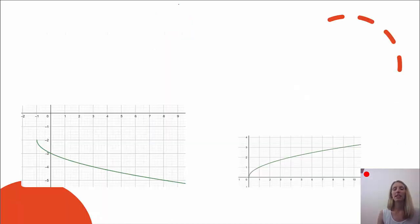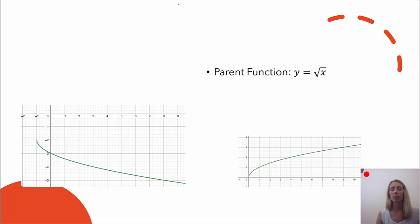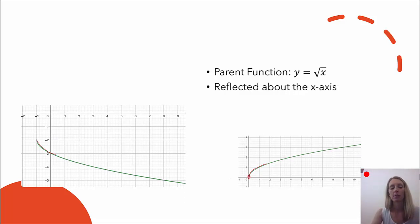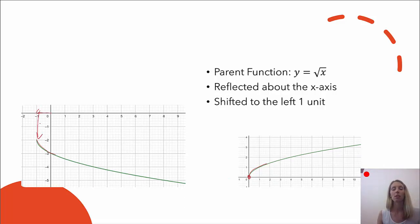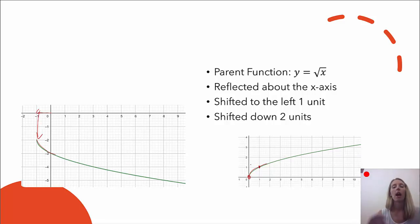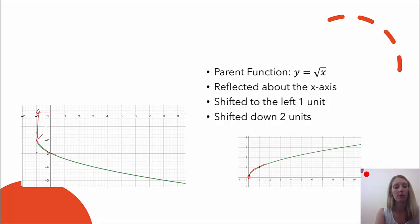Next is the square root function. The parent function is f of x equals the square root of x. I do see a reflection about the x-axis, because the parent function goes up while this graph goes down. The starting point zero-zero moved to negative one-negative two, so it shifted left one unit and shifted down two units. To check for stretch or shrink, I go over one and down one from the new starting point — since it flipped — and I hit the point, so there is no stretch or shrink on this graph.